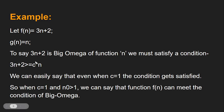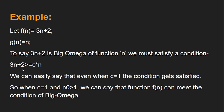We must satisfy the condition: 3n + 2 ≥ c·n. We can easily say that even when c = 1, the condition gets satisfied. Substituting 3n + 2 ≥ n — of course, that is satisfied. So with c = 1 and n₀ = 1, we satisfy f(n), meaning 3n + 2 is Big Omega of n.